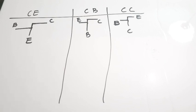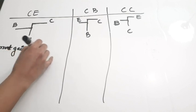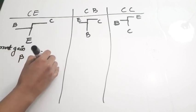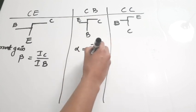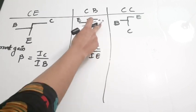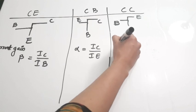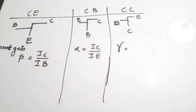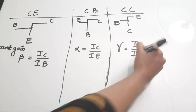A very important equation is the current gain equation. For common emitter, the current gain is called beta, given by IC/IB. For common base, the current gain is alpha, given by IC/IE — this is simply output current to input current. For common collector, the current gain is called gamma, given by IE/IB.